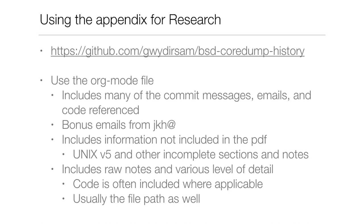The last part of this is pointing you at the paper this talk is based on. If you want to use it for research, the best place is the org mode file — it includes every note made while creating the paper, commit messages, emails sent back and forth, code referenced, and information that wasn't ready for the paper, like Unix V5 coverage and other incomplete sections. Code is often included so you can reference exactly where the information came from.